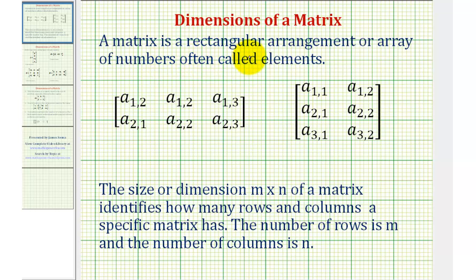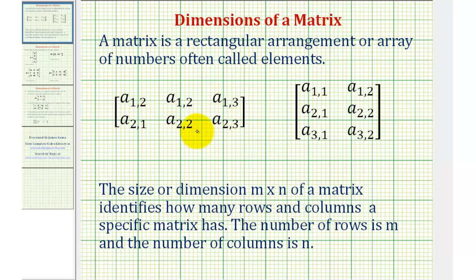A matrix is a rectangular arrangement or array of numbers, often called elements. Here are two examples of matrices. Notice how both matrices have six elements, but the arrangement is quite different.